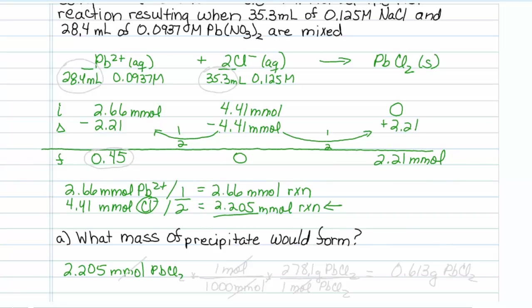of lead chloride, and of course there are 1,000 millimoles in a mole, so we have to correct for that, and we can look up the molar mass of lead and chlorine and discover that the molar mass of lead chloride is 278.1 grams of lead chloride per 1 mole of lead chloride. So millimoles are gone, moles. We are left with 0.613 grams of lead chloride.